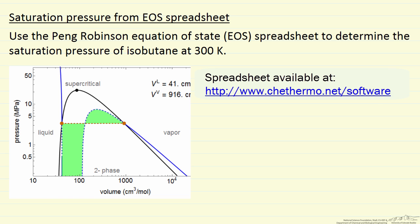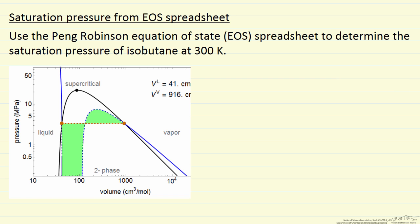I'm going to describe how to use an equation of state spreadsheet. The equation of state we're using is the Peng-Robinson equation of state. What we want to determine is the saturation pressure of isobutane at 300 Kelvin.